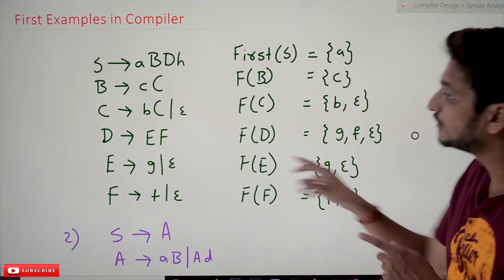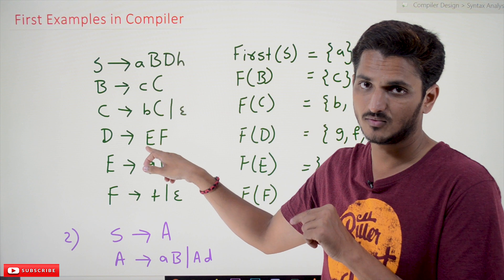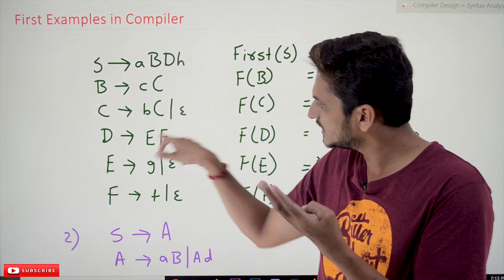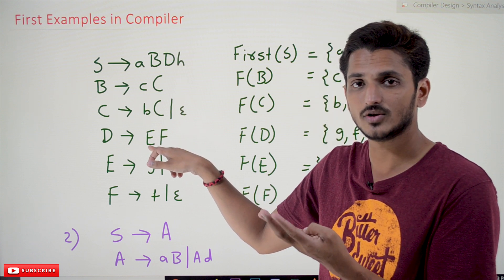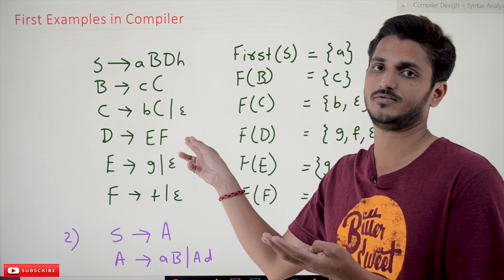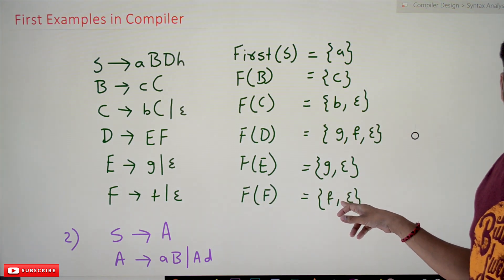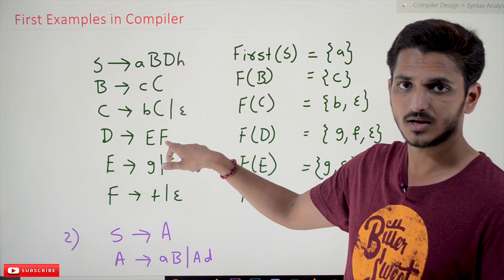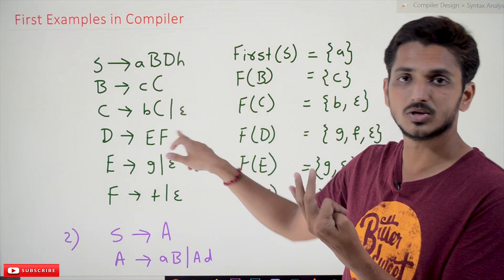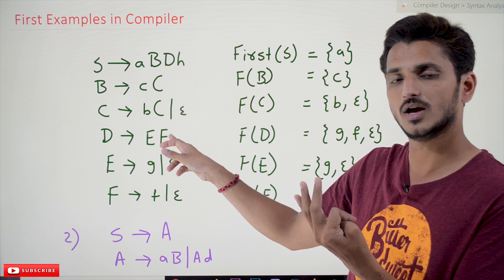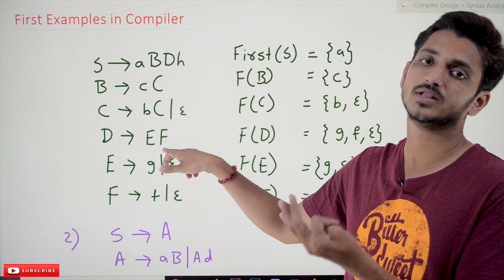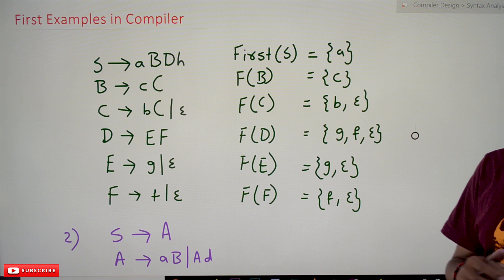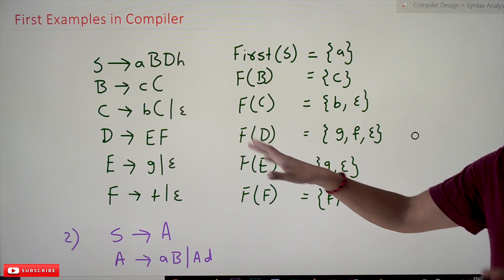FIRST(E) = {G, epsilon}. If you place G in place of E, the first symbol D is going to encounter is G. If you place epsilon in place of E, D is going to encounter FIRST(F). FIRST(F) = {F, epsilon}. If you place F, D encounters F. If both are epsilons — placing epsilon for E and epsilon for F — epsilon is encountered. That is why FIRST(D) = {G, F, epsilon}. This is very important to understand, and that is why we chose this example.